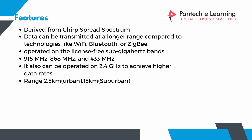LoRa can reach from 0 to 15 kilometers in suburban areas and 2.5 kilometers in urban areas. It operates on the license-free sub-gigahertz band at frequencies of 915 MHz, 868 MHz, and 433 MHz. At the Asia level, we use 433 MHz. You can also operate at 2 GHz to achieve higher data rates. Range and data rate are inversely proportional — as range increases, data transfer speed decreases, and vice versa.